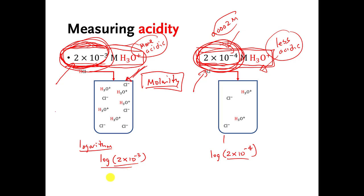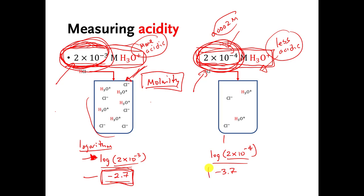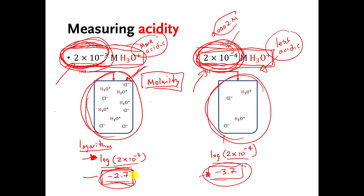If you take log(2 × 10⁻³) you get about negative 2.7, and log(2 × 10⁻⁴) gives about negative 3.7. Your friend says these numbers are better — no scientific notation. Negative 2.7 is still bigger than negative 3.7, so people would still know the left container is more concentrated. That sounds like a great idea.